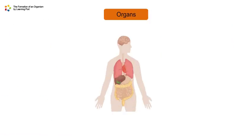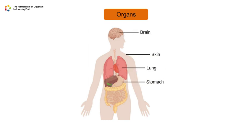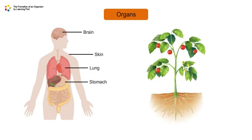Other organs of the human body include the brain, skin, lungs, and stomach. Examples of organs in plants are leaves, stems, flowers, roots, and fruits.